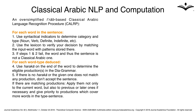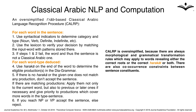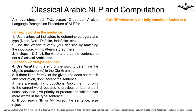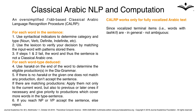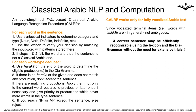CALRP is oversimplified because there are always morphological and grammatical transformation rules which may apply to words, revealing either the correct roots or the correct haraka, or both. There are also co-occurrence constraints between sentence constituents. CALRP works only for fully vocalized Arabic text. Since vocalized terminal items — words with tashkil — are in general not ambiguous, a correct sentence may be efficiently recognizable using the lexicon and the grammar without the need for extensive trials.